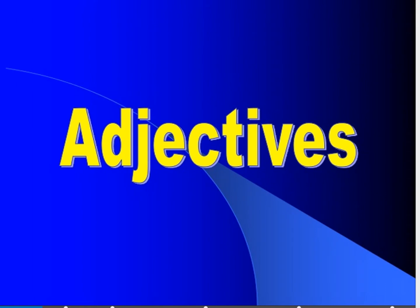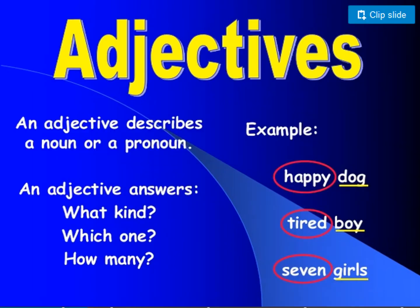First, we are going to see about adjectives. An adjective describes a noun or a pronoun. It describes in three ways: of what kind the noun is, which one, and how many. It answers all these three questions. For example, 'happy dog' — what kind of dog is it? It is a happy dog. Which boy? Tired boy. How many girls? Seven girls.